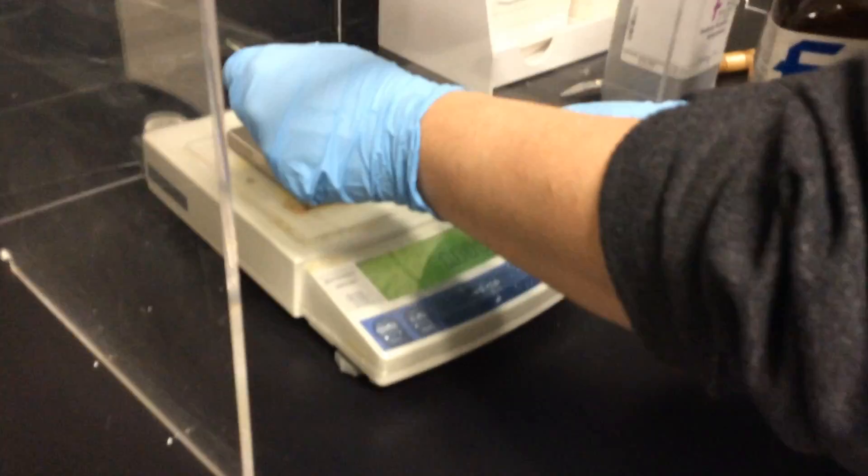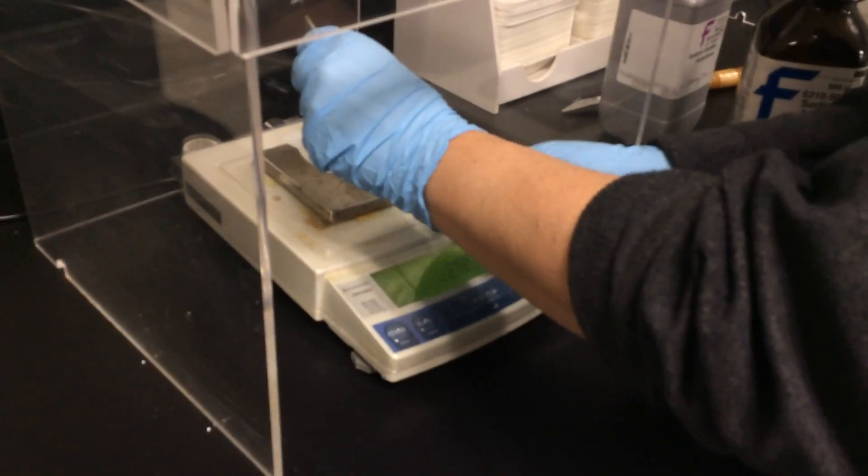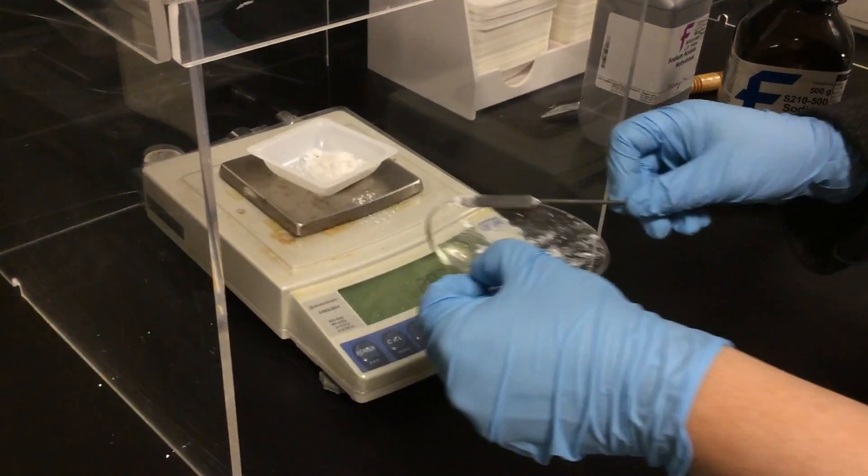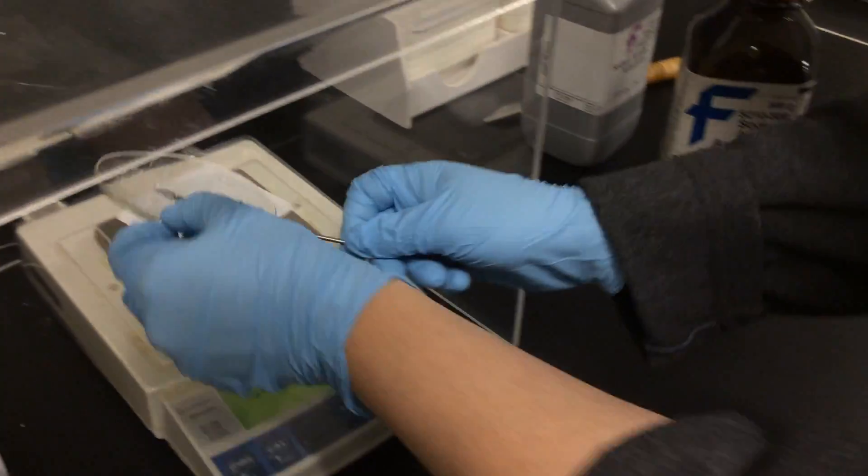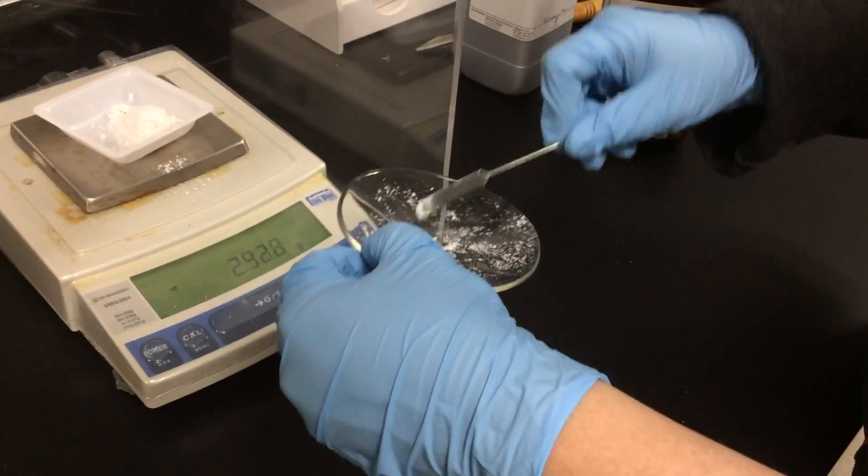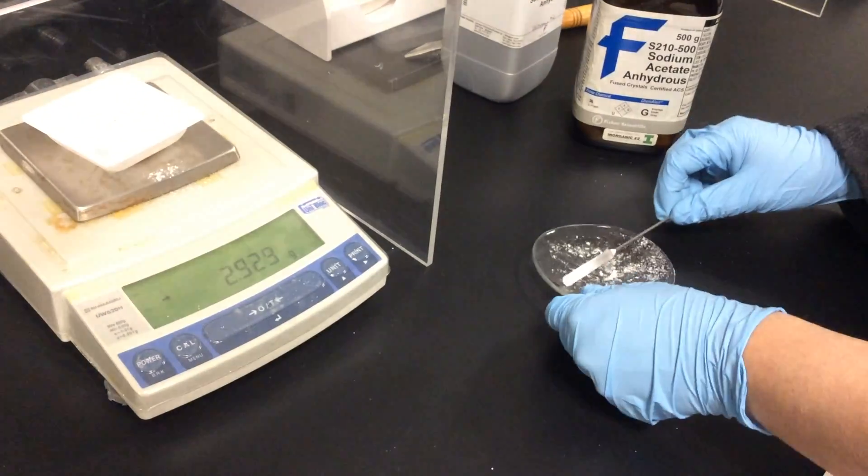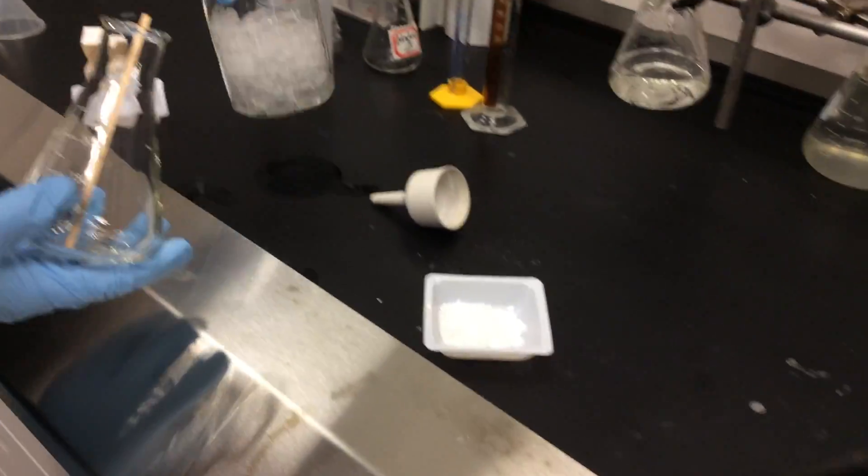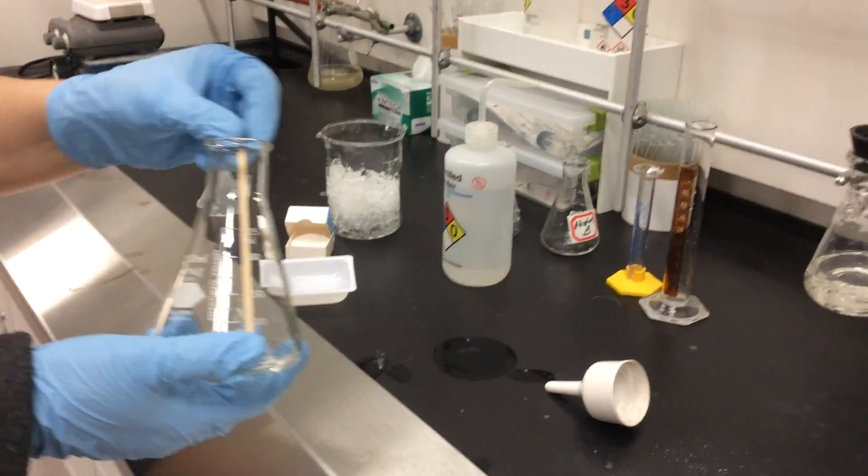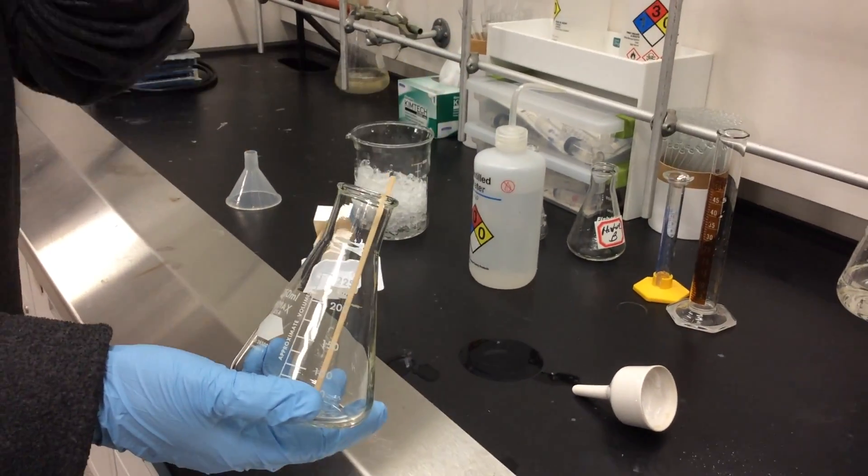Now we need to weigh our crude crystals. You can see we're putting them into a tared weighing boat. Once we have that, if there's a little bit of crystals left on the watch glass, we can leave that for a melting point.